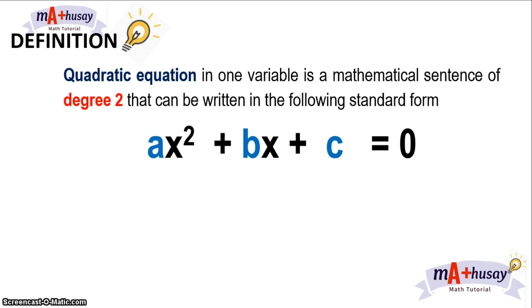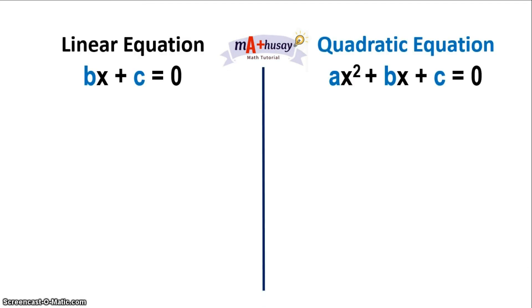Now that we know what a quadratic equation is, let's differentiate quadratic equation from linear equation. We know that quadratic equation is in the form ax squared plus bx plus c equals zero, where a, b, and c are real numbers and a must not be equal to zero. If a is equal to zero, then we no longer have a quadratic term, which will lead us to a linear equation, which is bx plus c equals zero. There are three things to consider when differentiating: the degree, the solution or roots, and the graph.